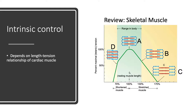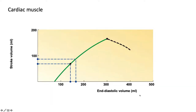Intrinsic control depends on the length-tension relationship of cardiac muscle. As review: for skeletal muscle there is an optimal length — the resting muscle length — that generates maximum tension during contraction with maximum overlap of myosin and actin. Stretching beyond optimal reduces overlap, and compressing or shortening also reduces overlap, both decreasing tension and muscle contraction.